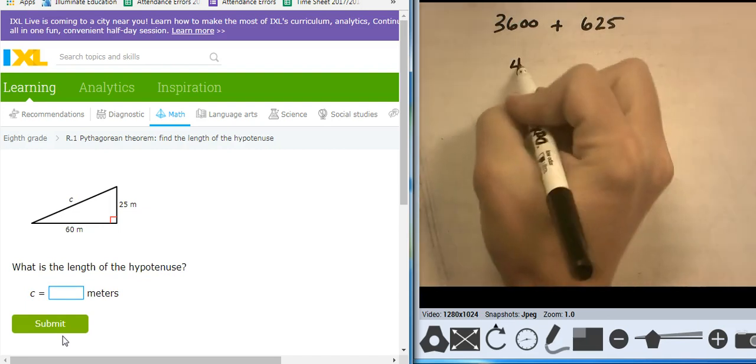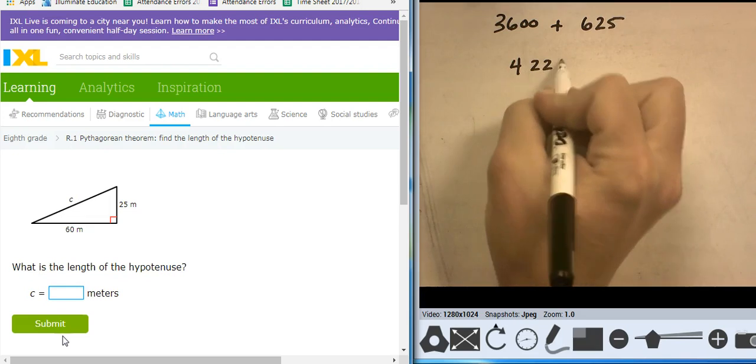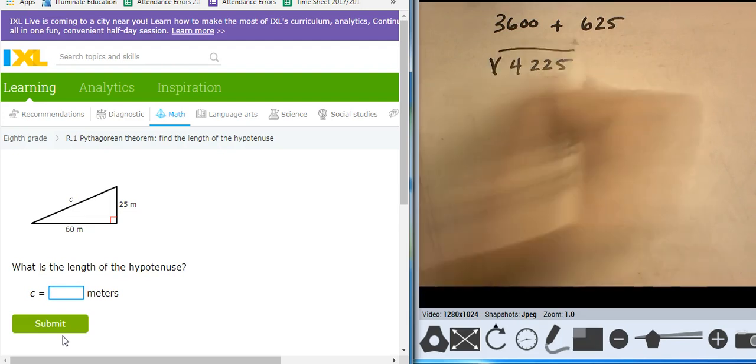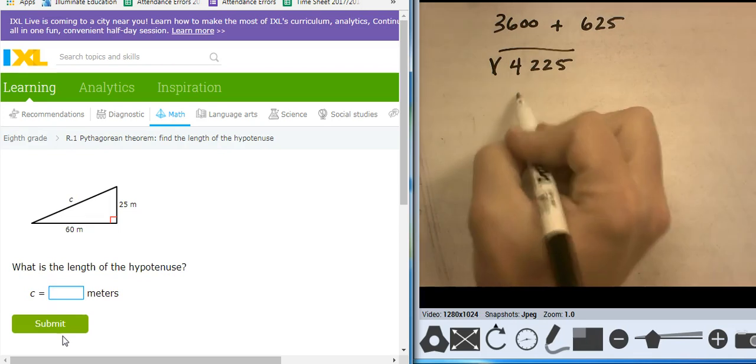Takes me to 4,225. Taking the square root of that. Takes me to 65.